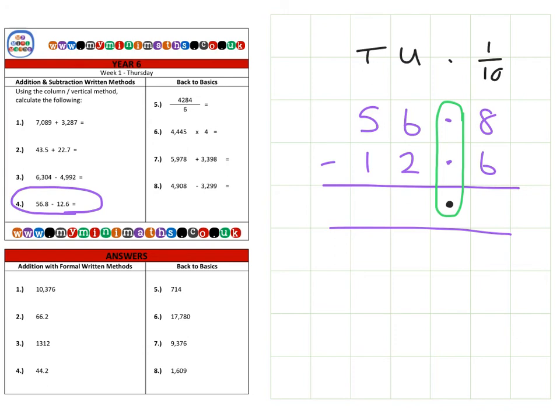So here we have eight tenths subtract six tenths, so that's two tenths. Then we move over to the units, that's six units minus two units, which is four units. And finally five tens, 50, subtract the single ten gives us four tens, which is 40, for a final answer of 44.2.